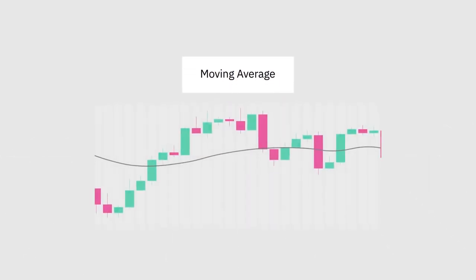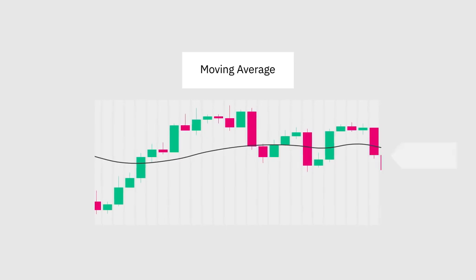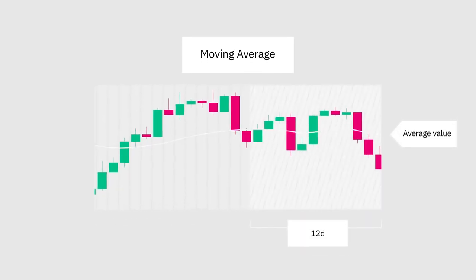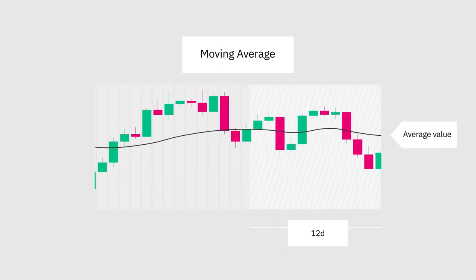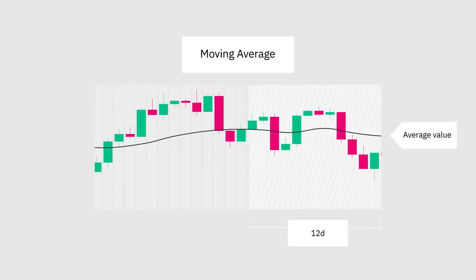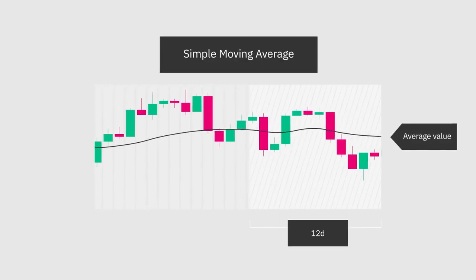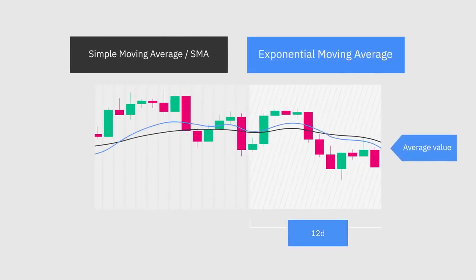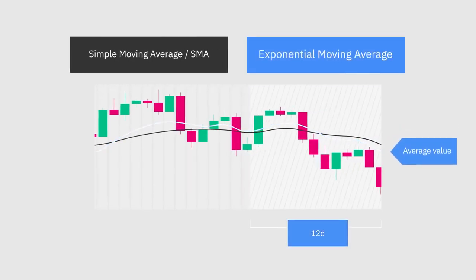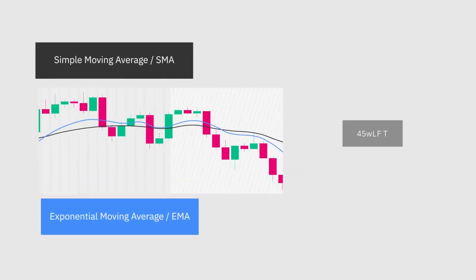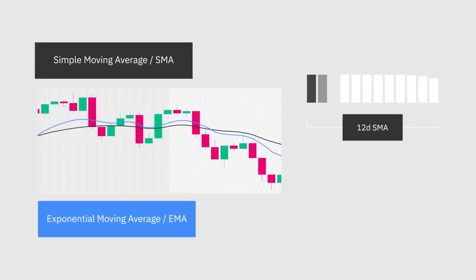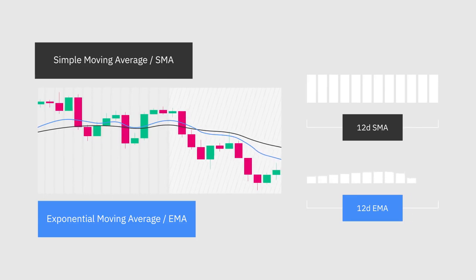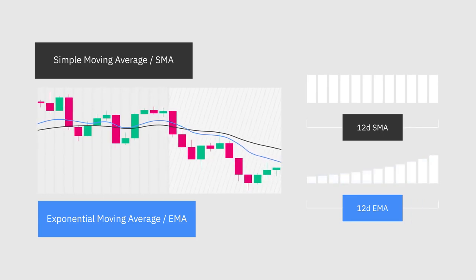A moving average is simply a line that represents the average value of previous data during a predefined period, and can be divided into two different types: Simple Moving Averages, also known as an SMA, and Exponential Moving Averages, also known as an EMA. While the SMA assigns equal weight to all previous data, an EMA assigns more importance to the most recent data values.